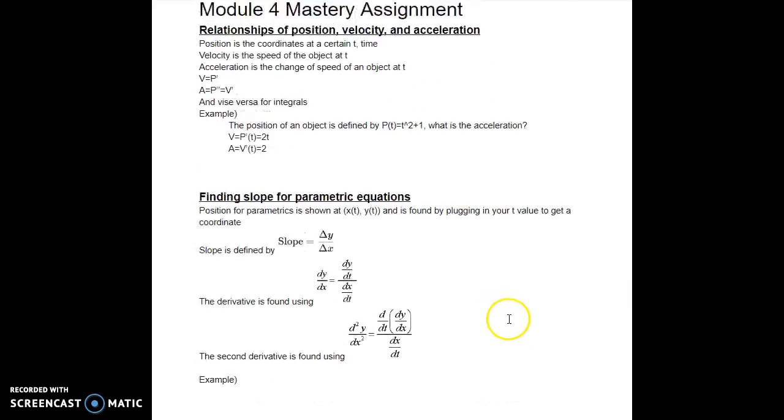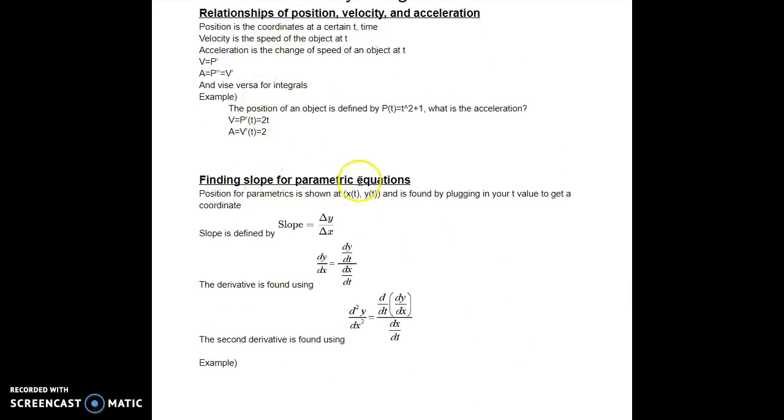So this is how you find slope for parametric equations, and those are the relationships of position, velocity, and acceleration.